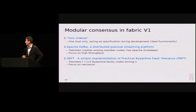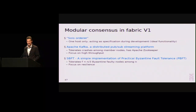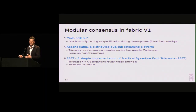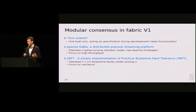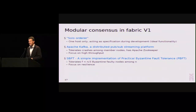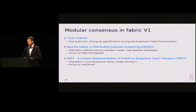As consensus methods, we have implemented three versions: a solo orderer, which is basically one box doing it — called the ideal functionality in crypto research; an Apache Kafka scalable pub-sub messaging toolkit that works in a crash-tolerant model; and a traditional BFT protocol derived from PBFT, which operates in a Byzantine agreement manner. Further protocols are possible to implement there.